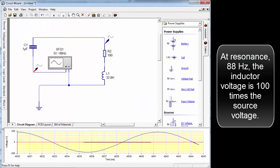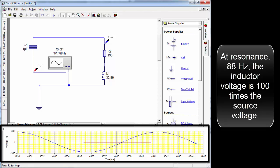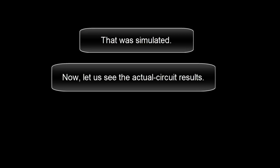At resonance, 88 hertz, the inductor voltage is 100 times the source voltage. That was simulated. Now let's see the actual circuit results.